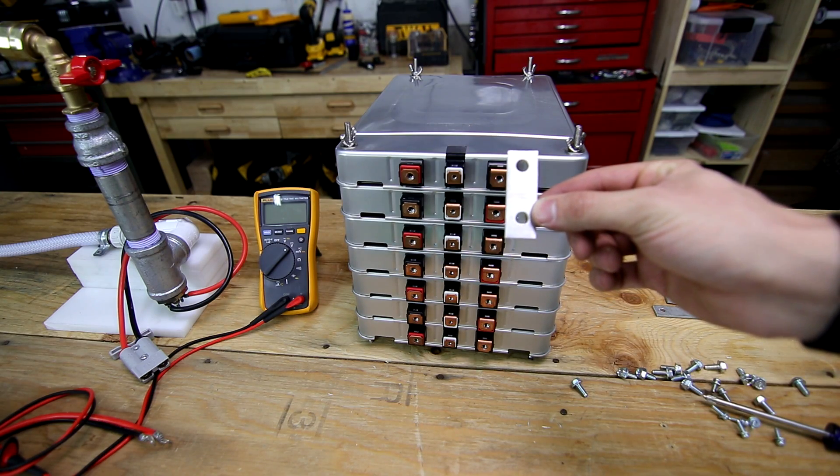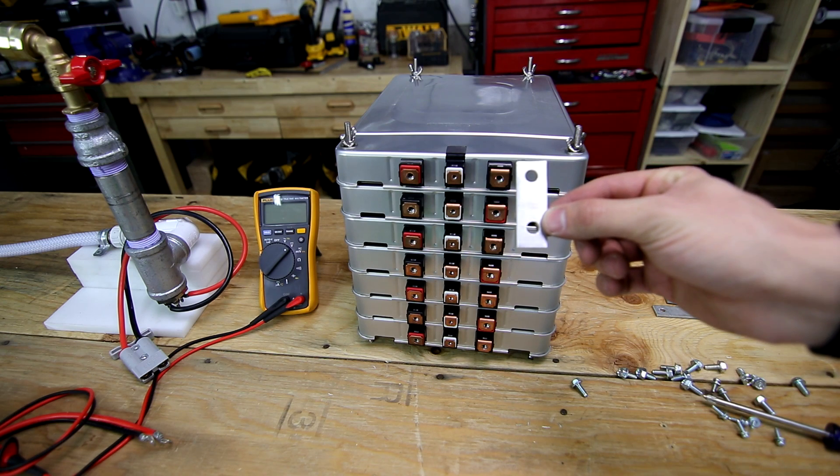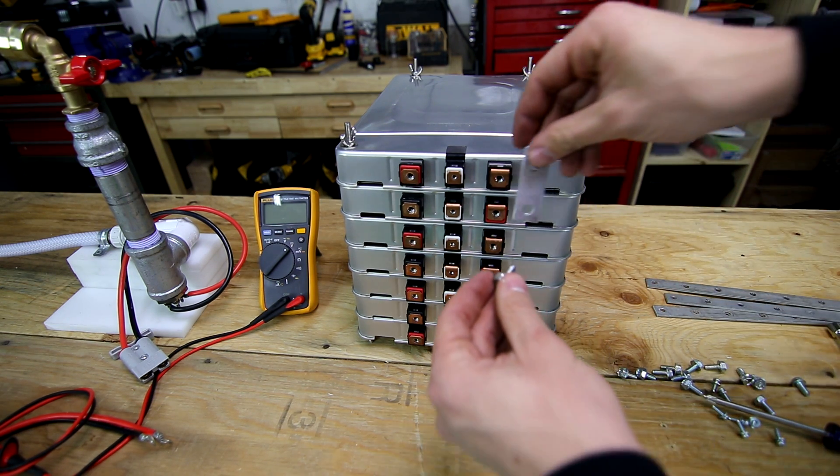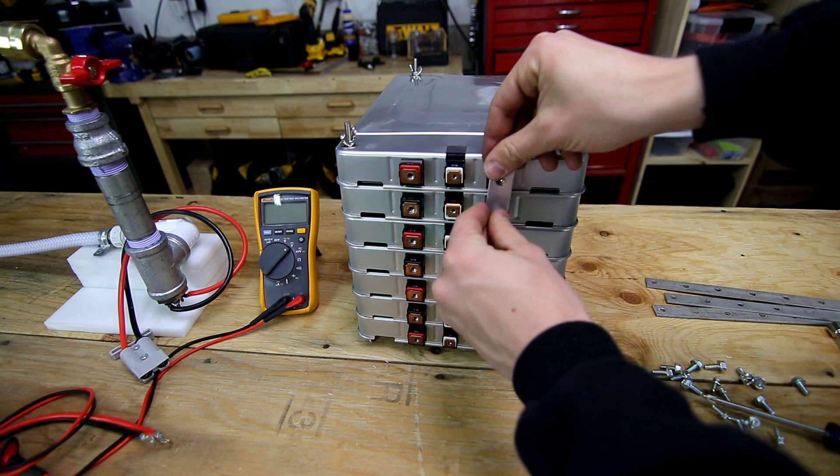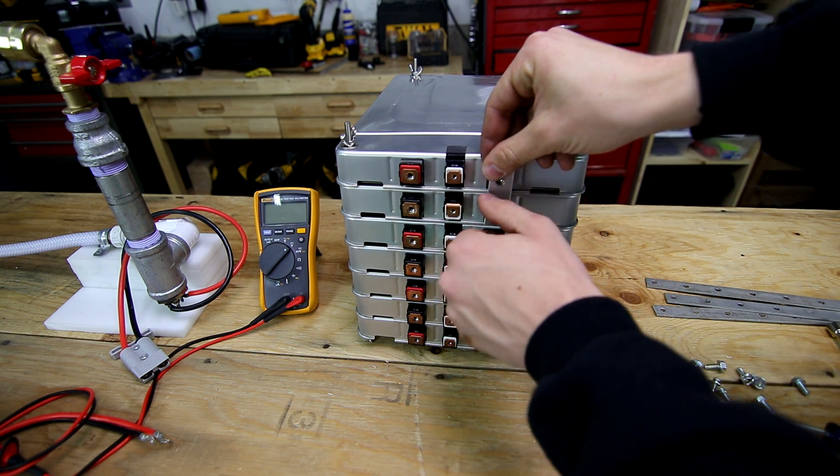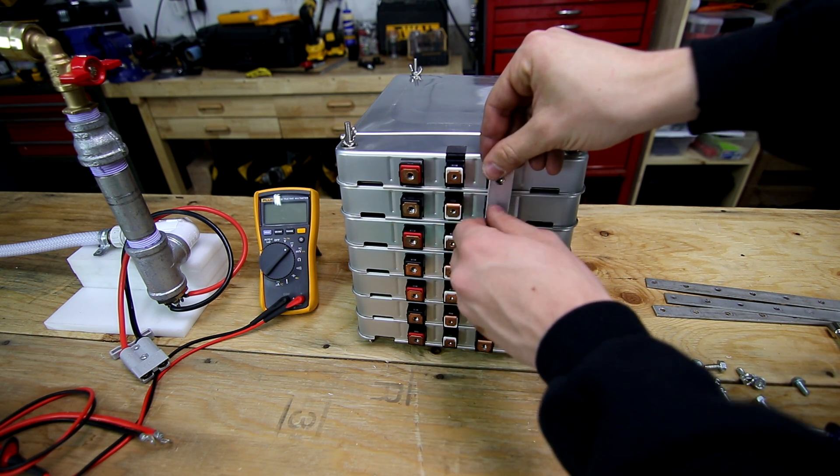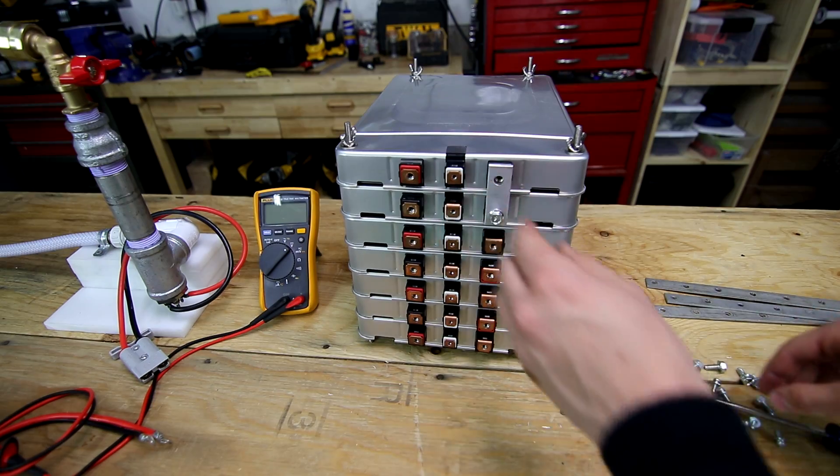You could simply just get some quarter twenty threaded rod and a couple of wing nuts or even just regular hex nuts and run them through these leaf cells. The holes are plenty big enough to hold this battery pack together. At this point you could make out of some aluminum or copper or buy some aluminum bus bars and connect these cells together. I opted to make these because I had some electrical grade aluminum bus bar laying around from another project.